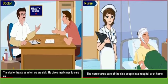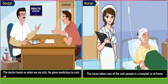Doctor and Nurse. What does the doctor do for us? The doctor treats us when we are sick. He gives medicine to cure us. And what does the nurse do? The nurse takes care of sick people in a hospital or at home. So these are our helpers — they help us in many ways.